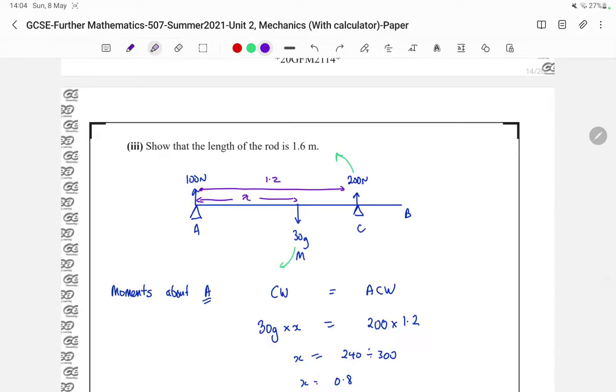Next question, we have to show that the length of the rod is 1.6 meters, so I've just done a quick sketch here. This 1.2 meters is given in the equation from A to C. So what I'm going to do is call the distance from A to the midpoint as X, I'll call that X.